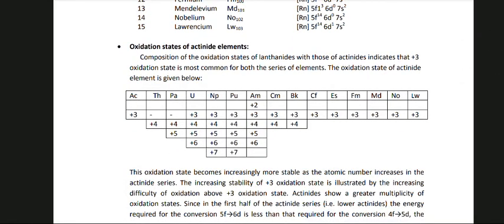Comparison of the oxidation states of lanthanides with those of actinides indicates that the +3 oxidation state is most common for both series. The oxidation states of actinides are: Ac: +3; Th: +4; Pa: +4, +5; U: +3, +4, +5, +6; Np: +3, +4, +5, +6, +7; Pu: +3, +4, +5, +6, +7; Am: +2, +3, +4, +5, +6; Cm: +3, +4; Bk: +3, +4; Cf: +3; Es: +3; Fm: +3; Md: +3; No: +3; Lw: +3.